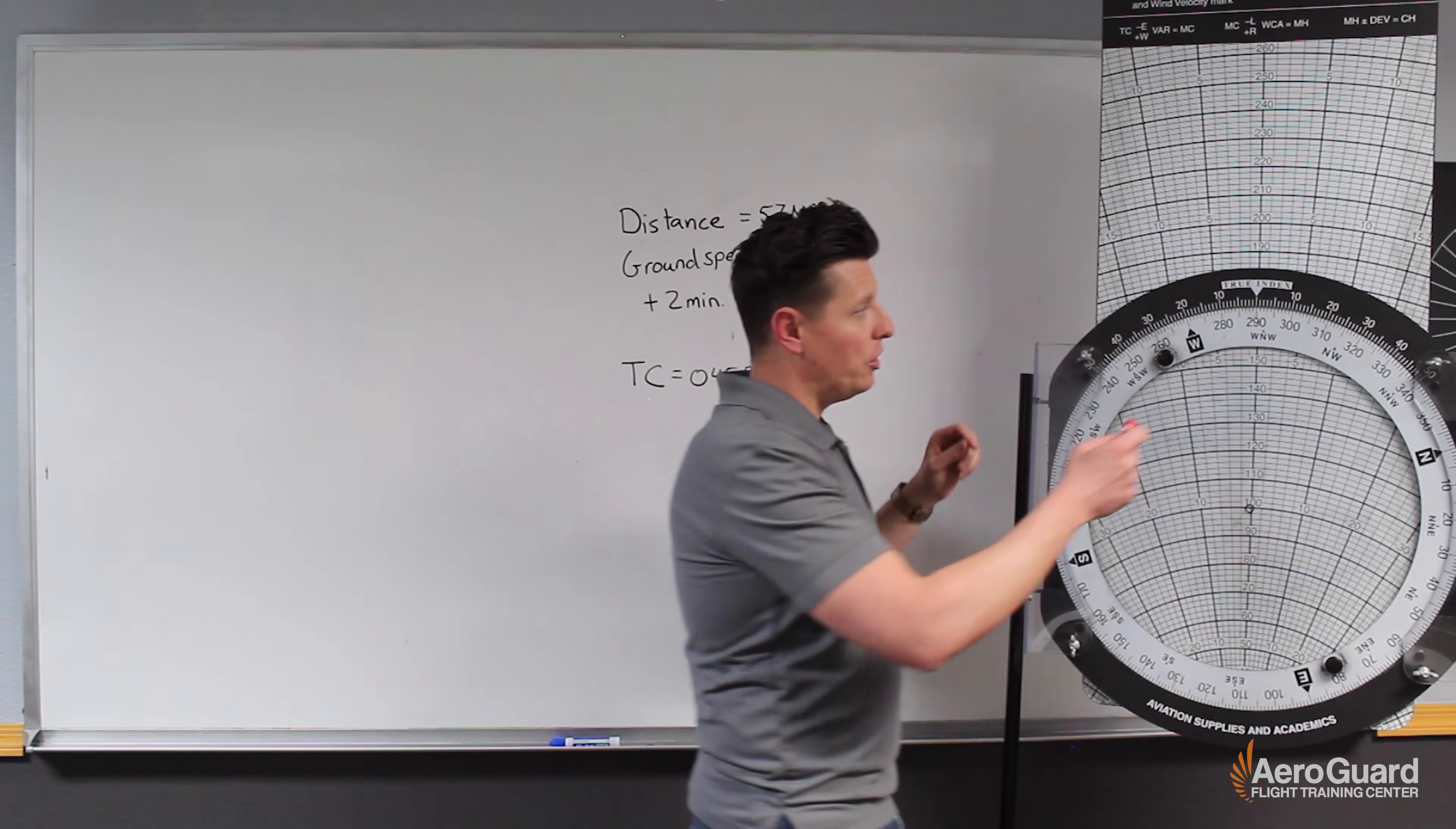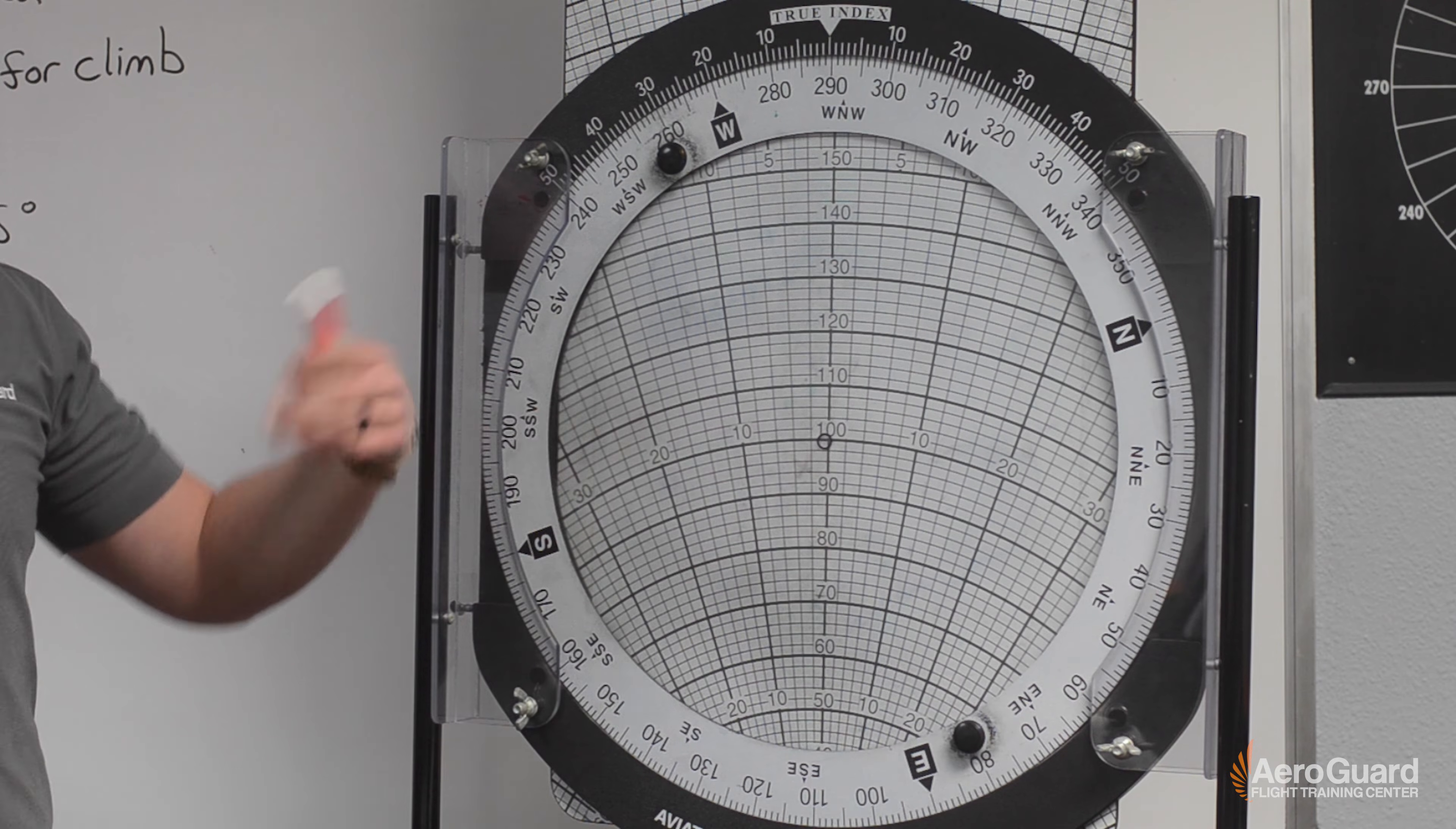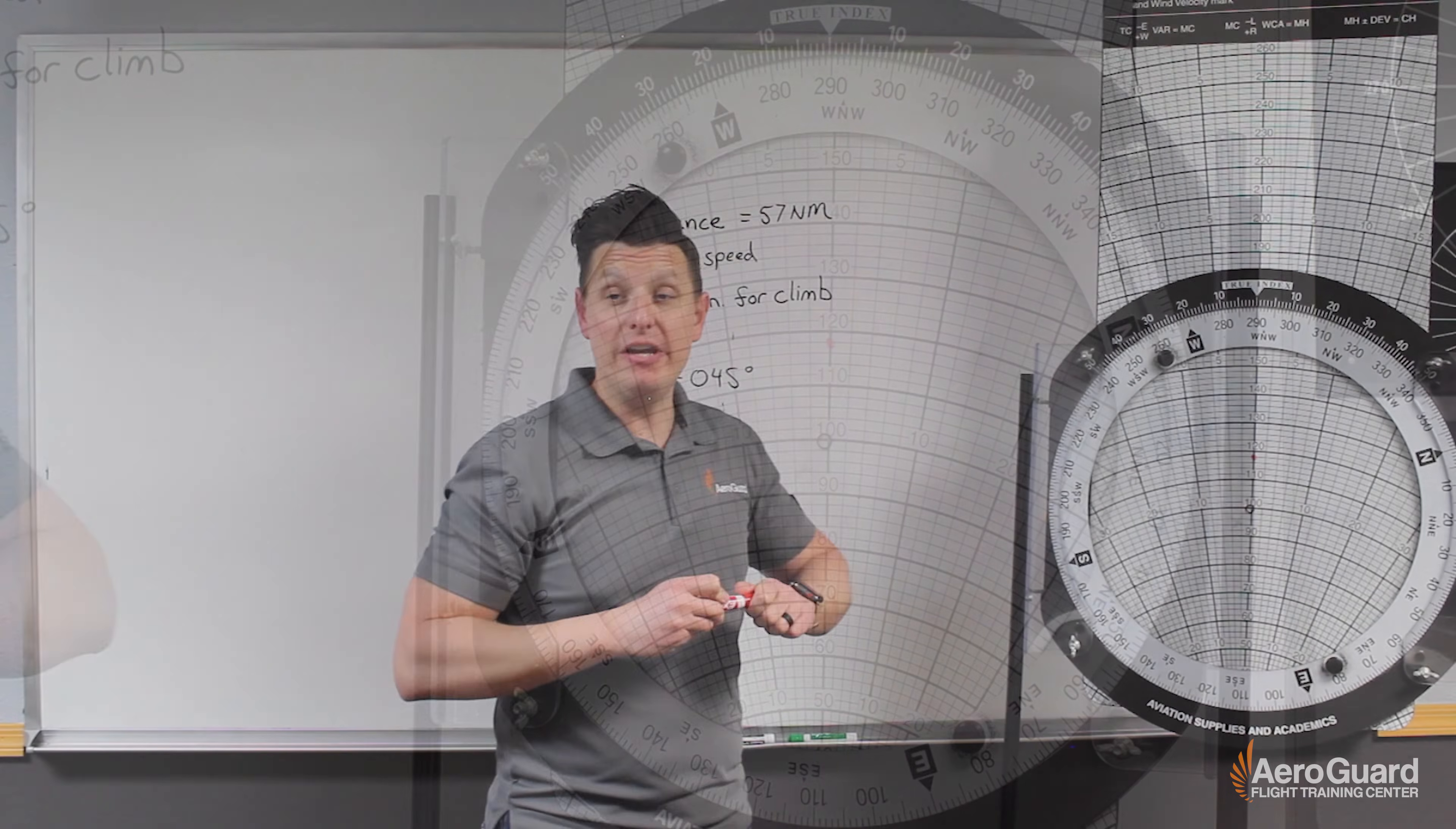To do that we're going to place our wind direction under the true index. In this case the wind direction from the question was 290 degrees so we're good there. And then we're going to mark the wind speed up from this center point. I chose 100 as a starting point simply because it makes the math a little bit easier. So in this case our wind speed was 18 knots so we're going to just mark 18 knots above this center dot. So there's our wind dot.